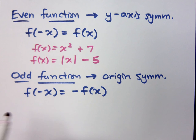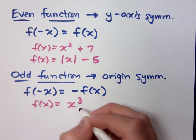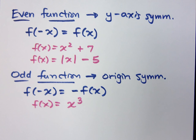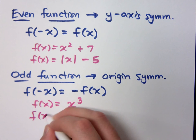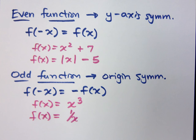Let me give you a classic example. x to the third has origin symmetry. If I rotate it 180 degrees, it has the same shape. Another good example is 1 over x, which we'll be seeing later. These are great examples of odd functions — things that have origin symmetry.